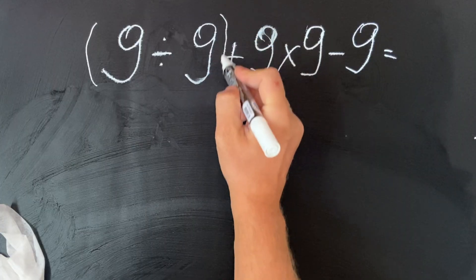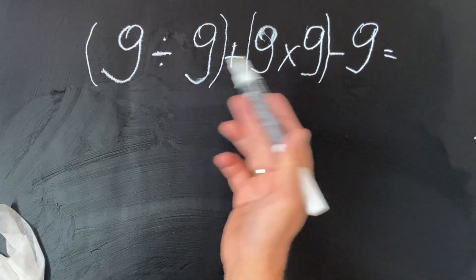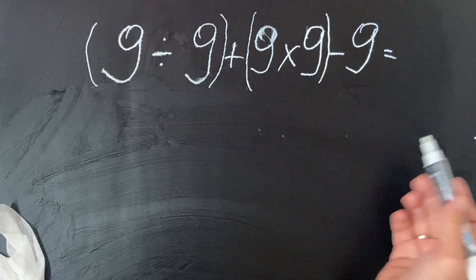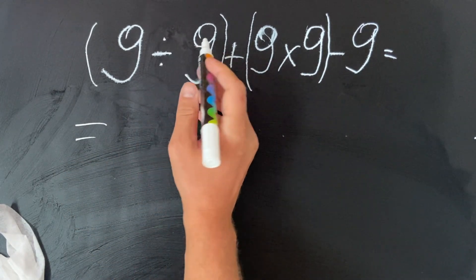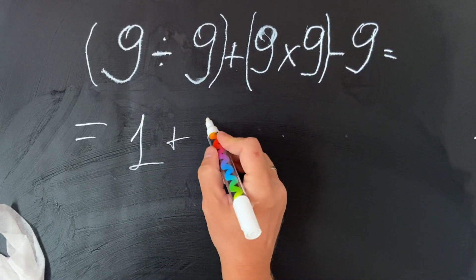To visualize it better, I advise you to always put the numbers in brackets so you're not visually confused. So we get 9 divided by 9 is 1, plus 9 multiplied by 9 is 81, minus 9.